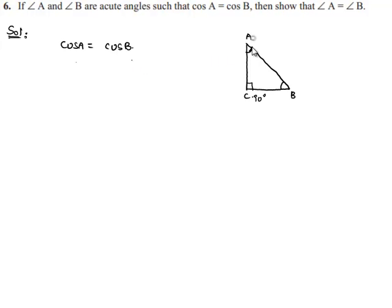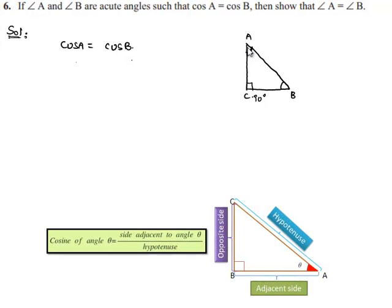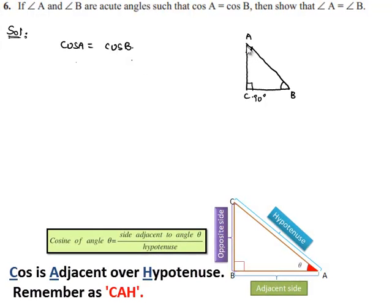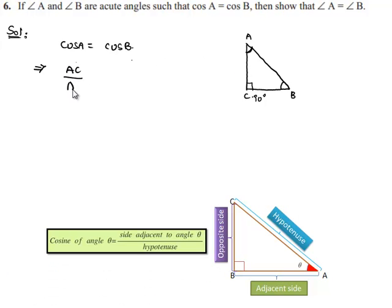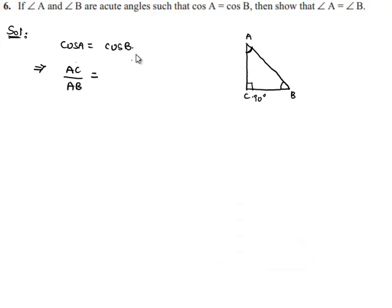If we consider cos A, we know that cosine of an angle is equal to its adjacent side by hypotenuse. We can write cos A as AC by AB, which is equal to cos B. The adjacent side of angle B is BC and hypotenuse is AB.